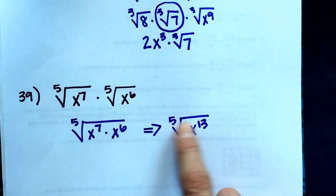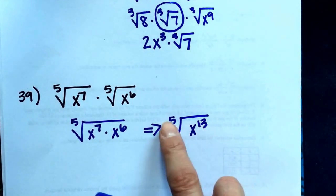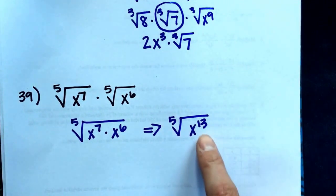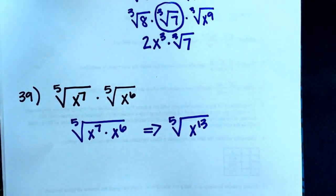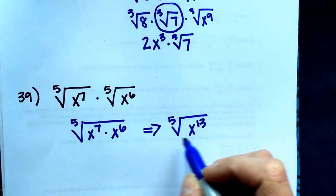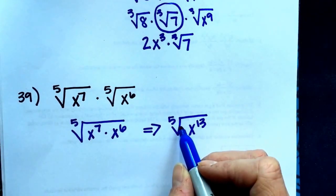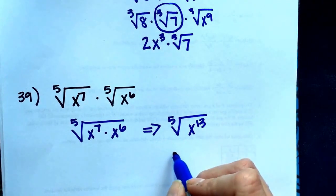Now in order for it to come outside, I have to be able to divide it by 5 and have it come out evenly. Well, 13 divided by 5 is not an integer, it's not a whole number. So I'm going to split this x to the 13th up into something that's divisible by 5, the biggest number that's divisible by 5.